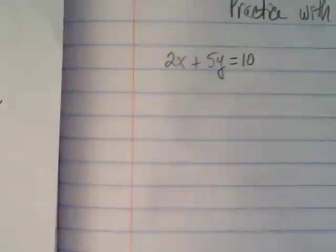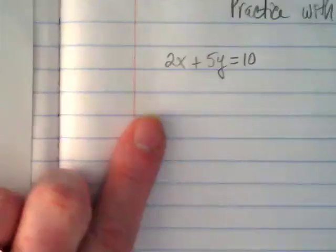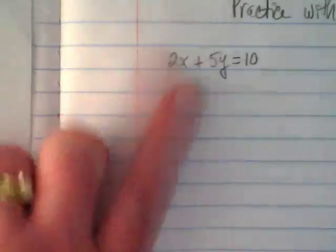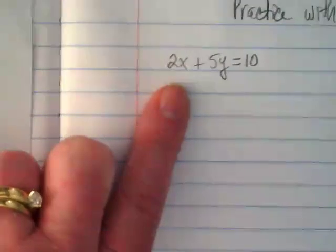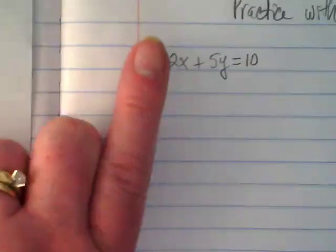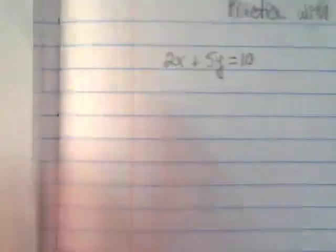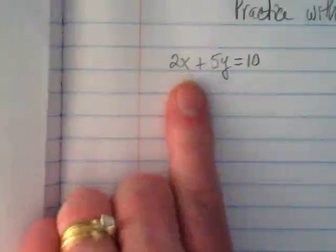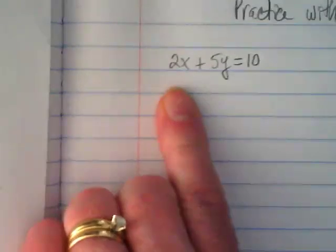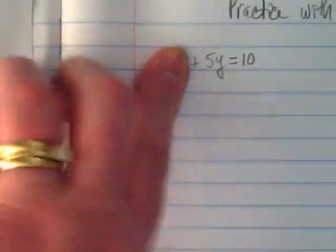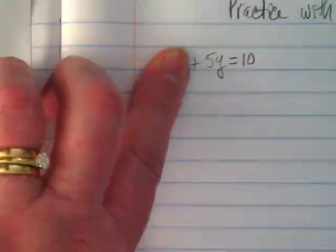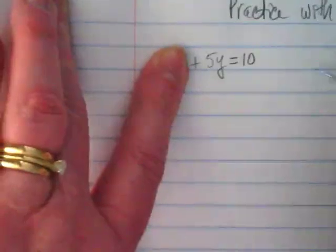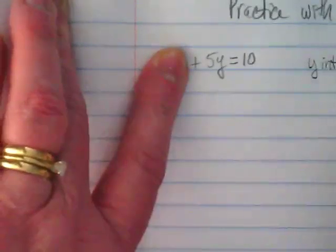What did we talk about yesterday as the best way to find intercepts when it's in this form? We're going to put a zero in for x and then we can find the y, or we can just use what's called the cover-up method. It's a trick but it's not. What we're really saying is if I put a zero in there, 2 times 0 would be 0. So why go through that work when you can just do this? And what do I have left? 5y equals 10. So my y-intercept is 2.